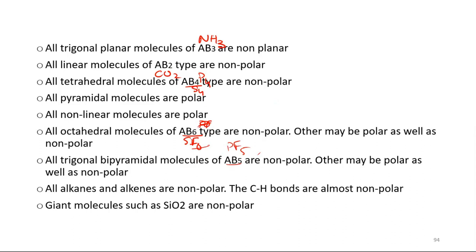Linear molecules of AB2 type are non-polar. Tetrahedral molecules of AB4 type are non-polar. Trigonal pyramidal molecules are polar. Non-linear molecules are polar. Octahedral molecules of AB6 type are non-polar. Trigonal bipyramidal molecules are non-polar.